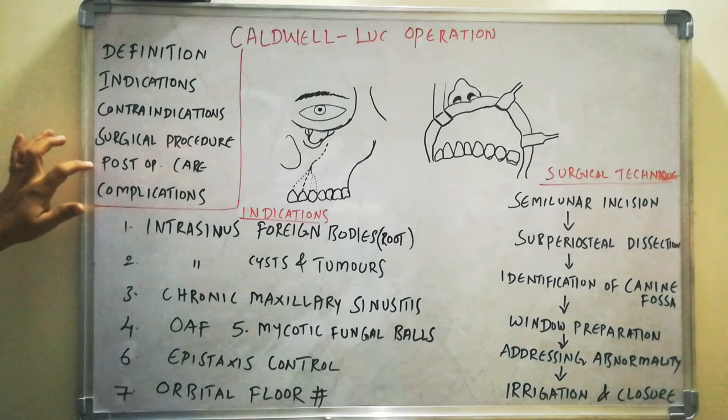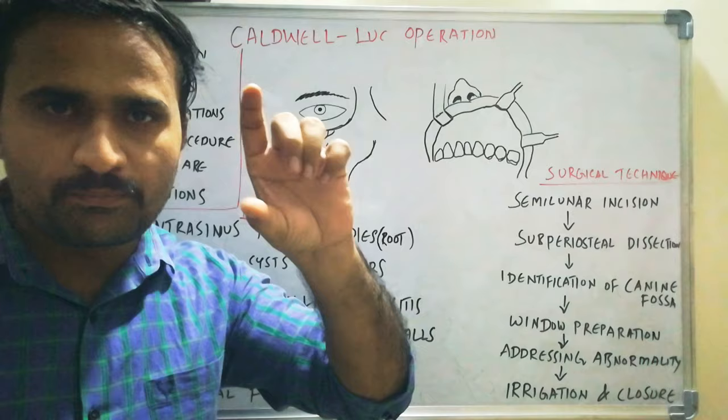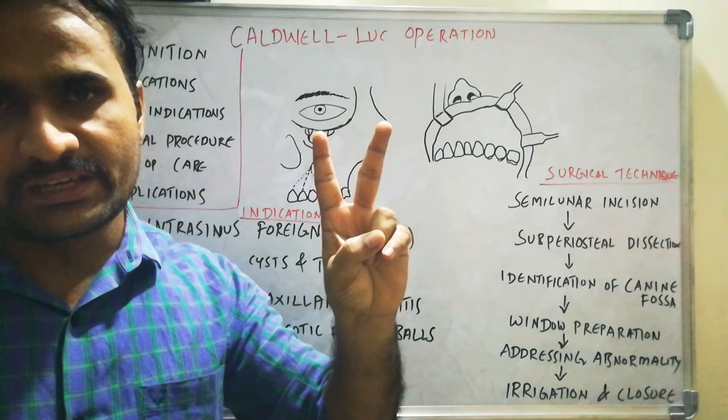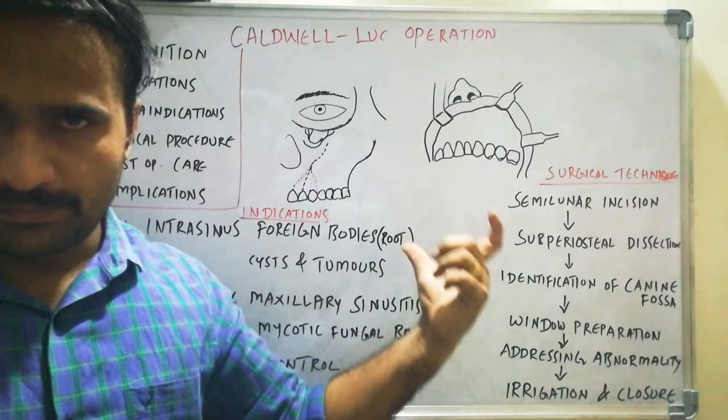It is the method of gaining entry into the Maxillary Sinus via the Canine Fossa approach — that is, by preparing a window at the Canine Fossa. When writing the definition, two key words are important: Maxillary Sinus and Canine Fossa. If you write and underline those two words, it is enough to show the examiner that you know the concept.